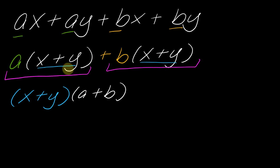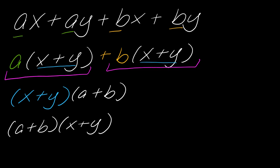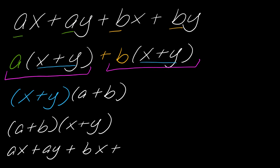One thing to note: it doesn't matter the order you write this in. You can write this as x plus y times a plus b, or a plus b times x plus y — either way it works. You can check this by multiplying these polynomials back together. a times x gives ax, a times y is ay, b times x is bx, and b times y is by. If I multiply all of this back out, I get back to the original polynomial. So that's how grouping works.